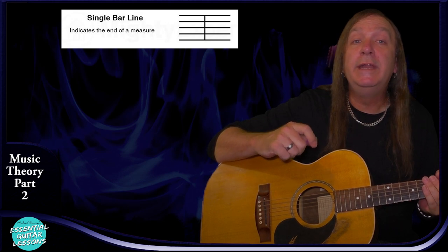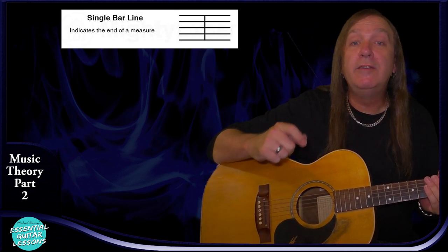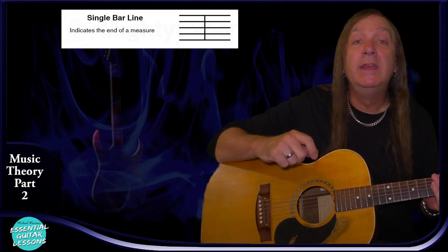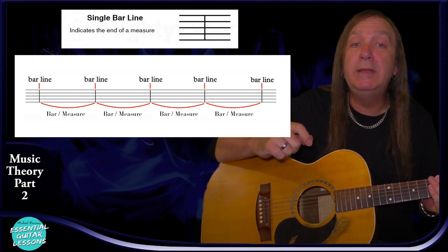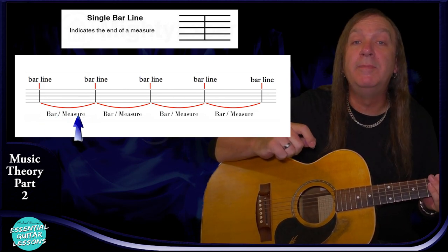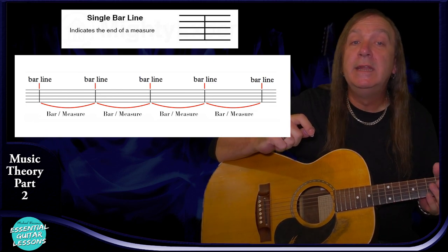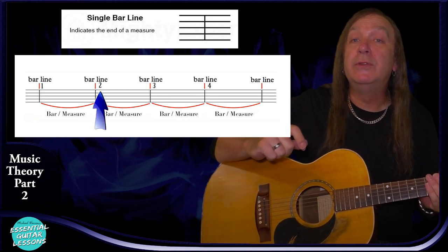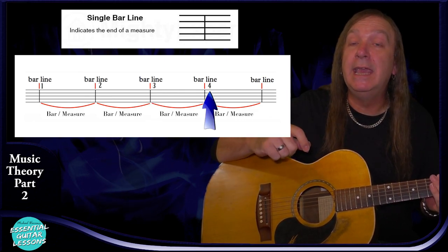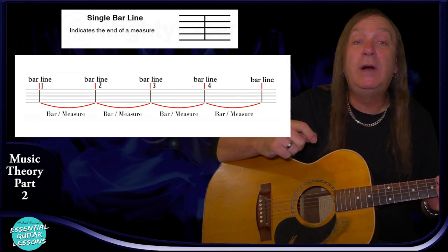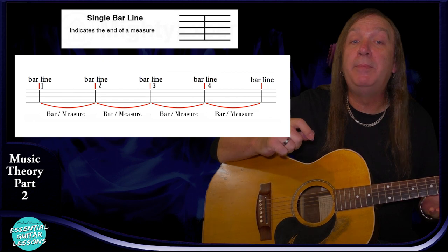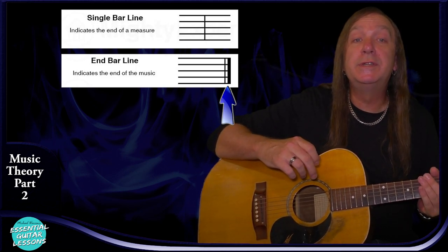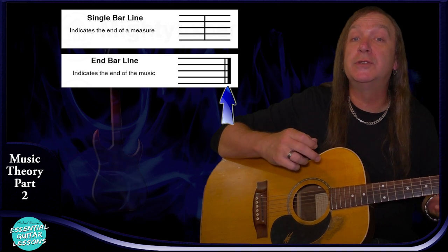The first bar line type is just a single line — when we get to one we just keep playing through. It's just a way of breaking the music up into smaller sections. The part between the bar lines we call the bar or the measure, and this is where we place the notes and other musical symbols. We also number the measures so we can identify where we are easily — if I was playing with a group of musicians I could say 'start from bar 15.' To end our piece of music we use a double bar line with the second line being thicker than the first, and when we get to that we just stop playing.